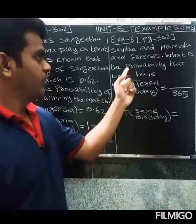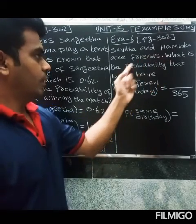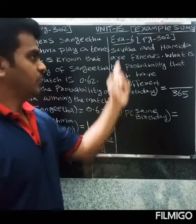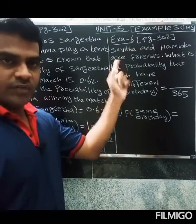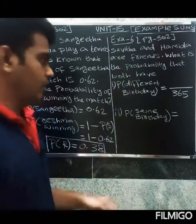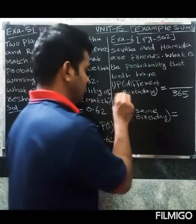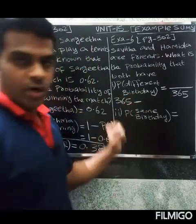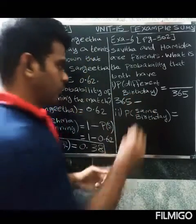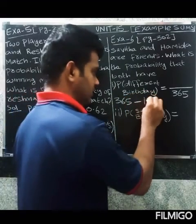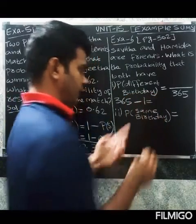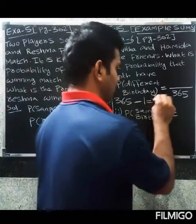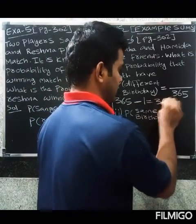What is the probability that both have different birthdays? Savitha and Hamitha have different birthdays. Total days equal 365. So 365 minus one — if Savitha's birthday is on one day, Hamitha has 364 remaining possibilities to get a different birthday.